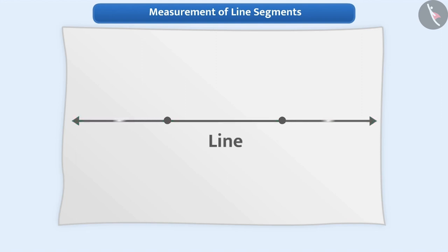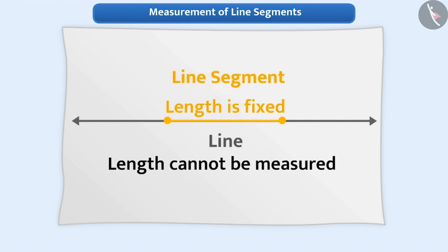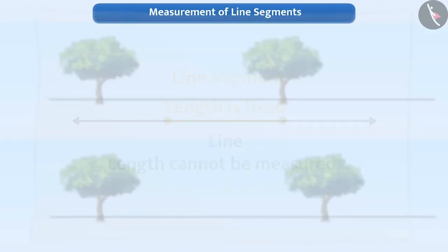As there is no endpoint to a line, we can say that the length of a line cannot be determined. In this way, we can say that a line segment is a part of a line whose length is definite. In this video, we will learn to find out the length of the line segment.